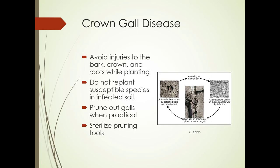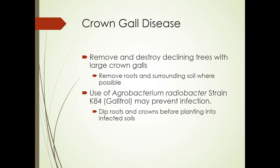It's important to avoid injuries to the bark, crown, and roots while planting. You don't want to replant susceptible species in infected soil. If you can prune out the gall, make sure your cuts are well below the damage, and sterilize your pruning tools between cuts. Remove and destroy declining trees with large crown galls and remove the roots and surrounding soil if possible. You could try Agrobacterium radiobacter strain K84 gall control to prevent infection — it won't cure it, but you can dip roots and crowns before planting in infected soils.